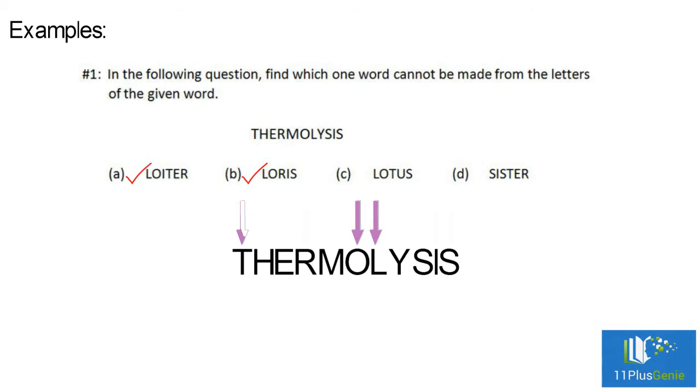C. L-O-T-U. There is no U in thermolysis, so lotus can't be formed. The correct answer is C.